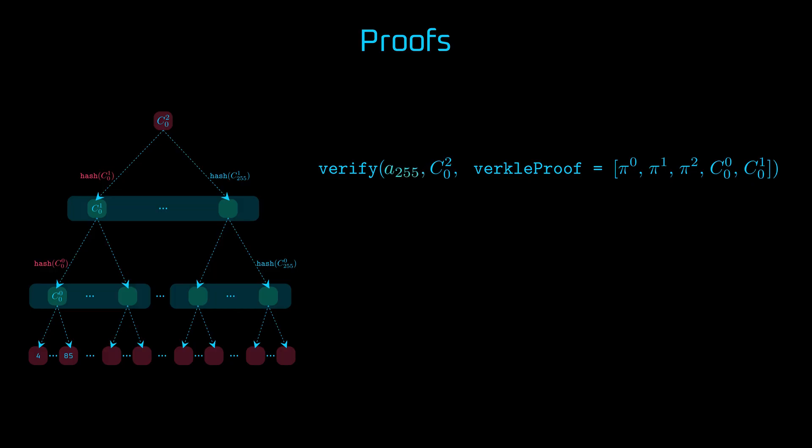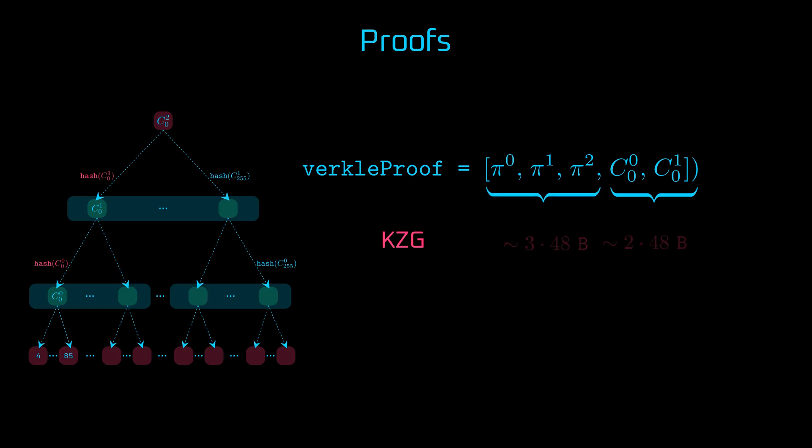Depending on the choice of commitment scheme, verkle proofs have different sizes. If we use KZG commitment scheme, commitments and opening proofs are elliptic curve points, 48 bytes each. For each level, we have one proof. So by taking three proofs and two commitments, we land in a total of just over 240 bytes.